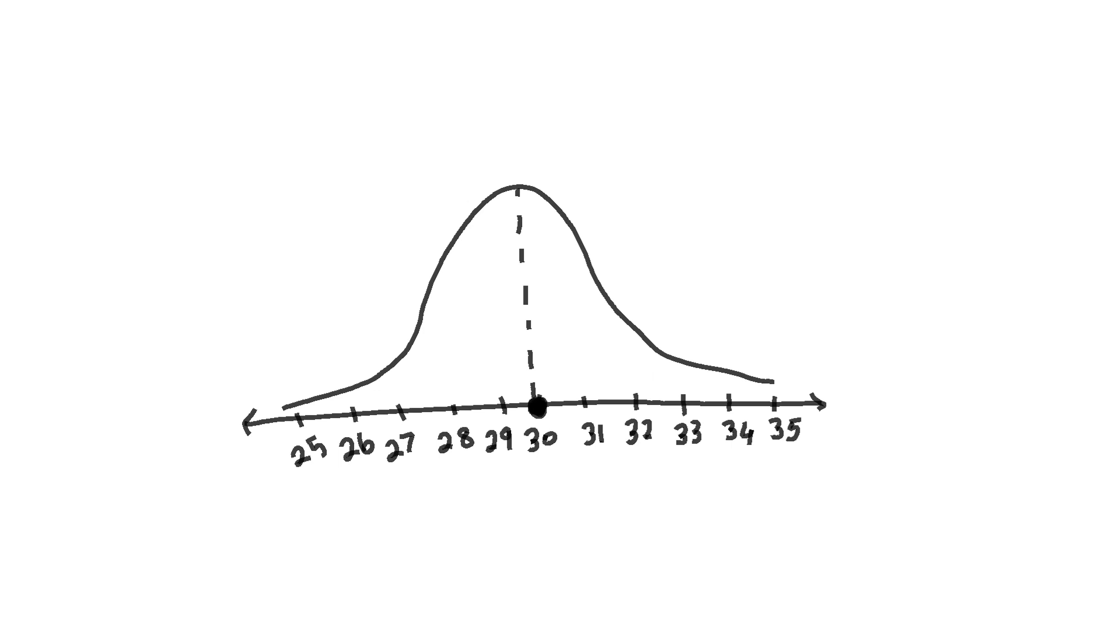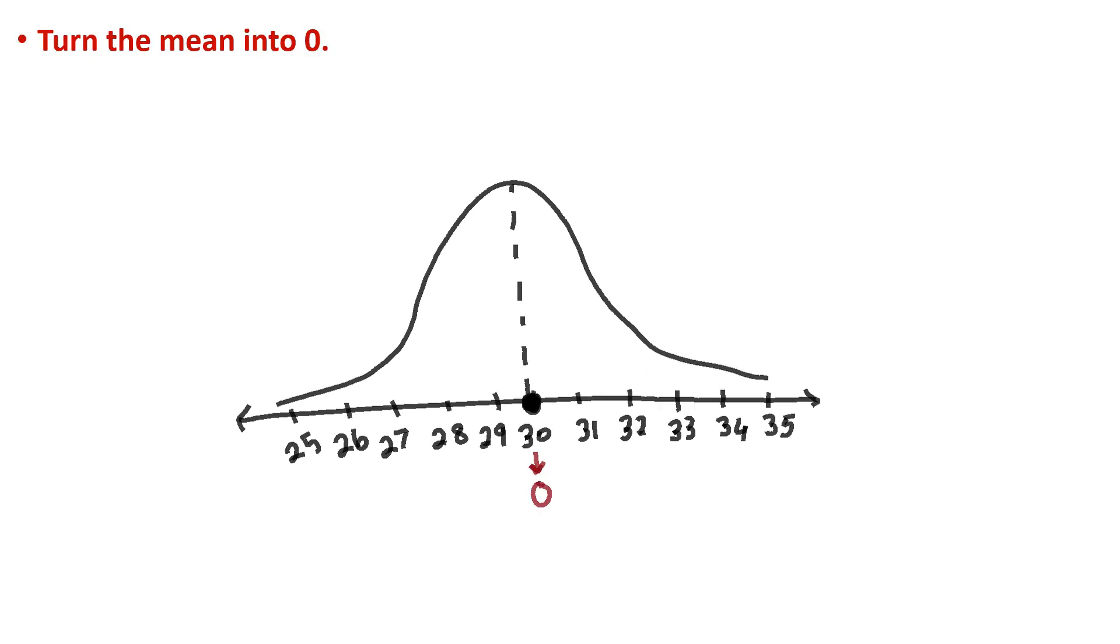This is our normal distribution where 30 is the mean or the average. When we turn the mean or the average into a zero, we start doing the centering.